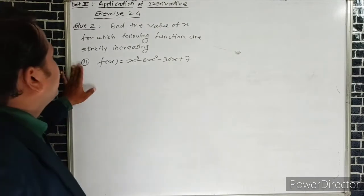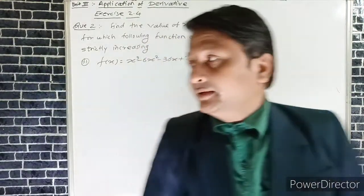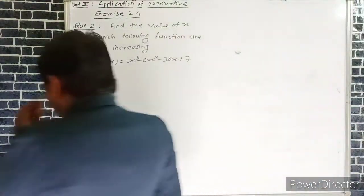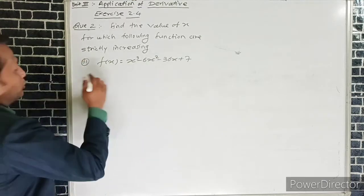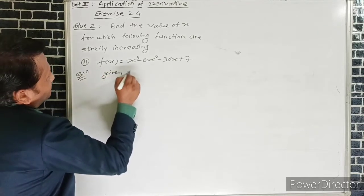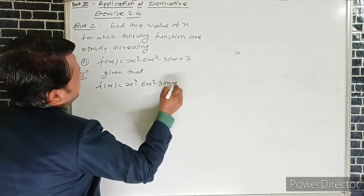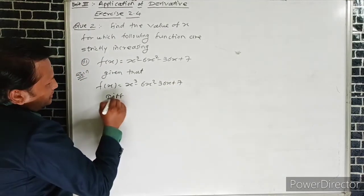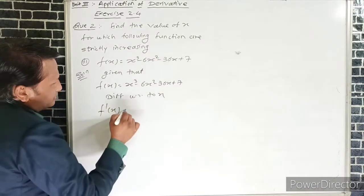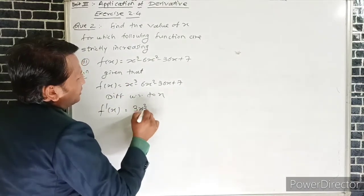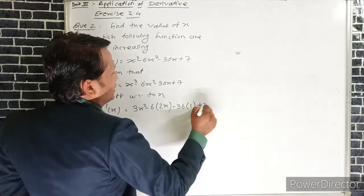Example 3: f(x) = x³ - 6x² - 36x + 7. We need to find the value of x when f(x) is strictly increasing. Since the function is strictly increasing, f'(x) > 0. We differentiate: the derivative of x³ is 3x², the derivative of x² is 2x, the derivative of x is 1, and the derivative of 7 is 0.